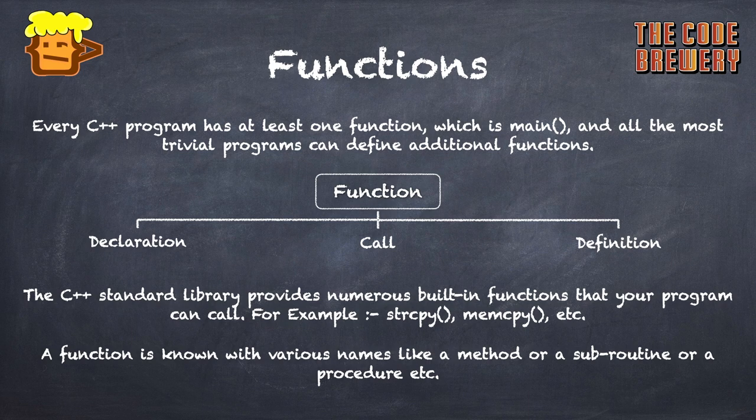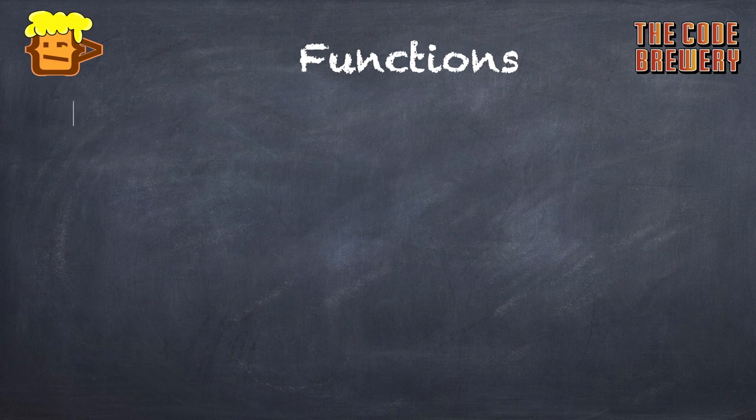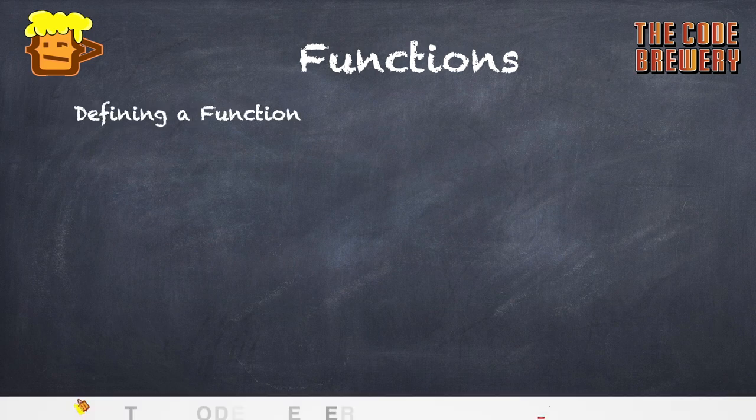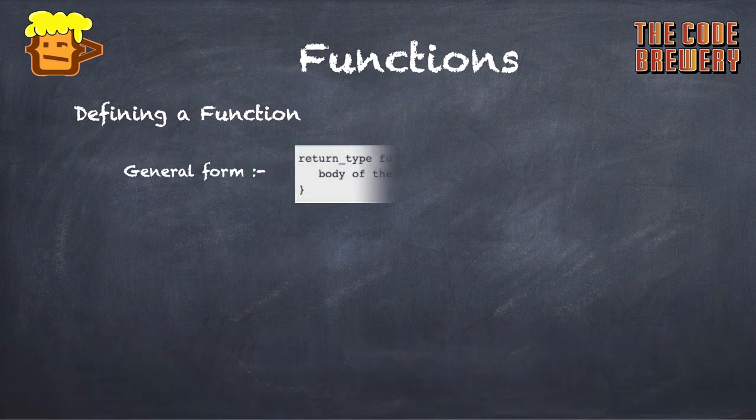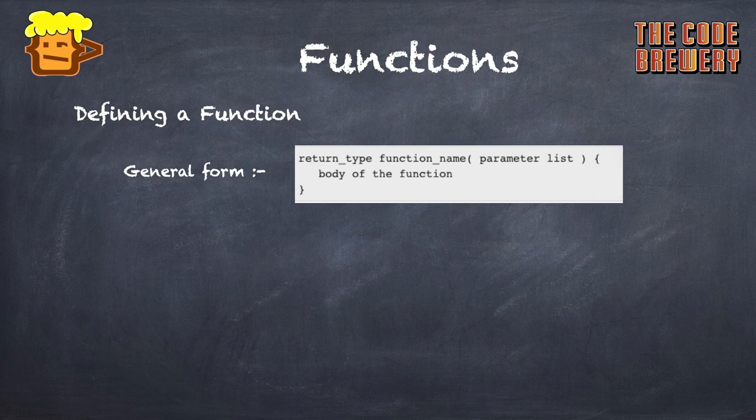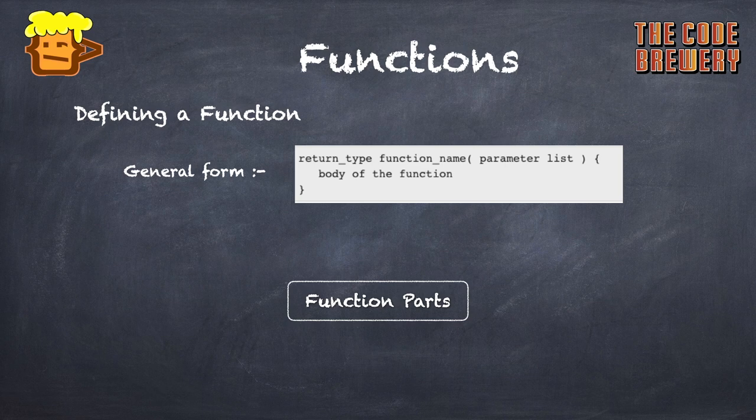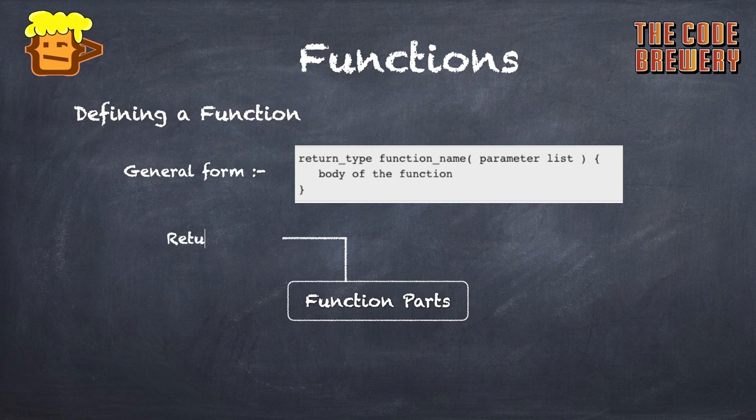In this section we'll see about defining a function. A general form for defining a function is: we normally write the return type. Return type can be of any basic data types or which you might create by using the typedef keyword which we have discussed earlier. We write return type, then function name.